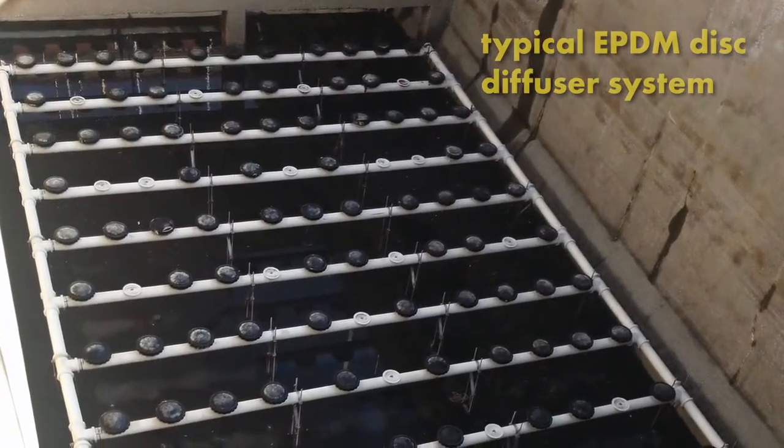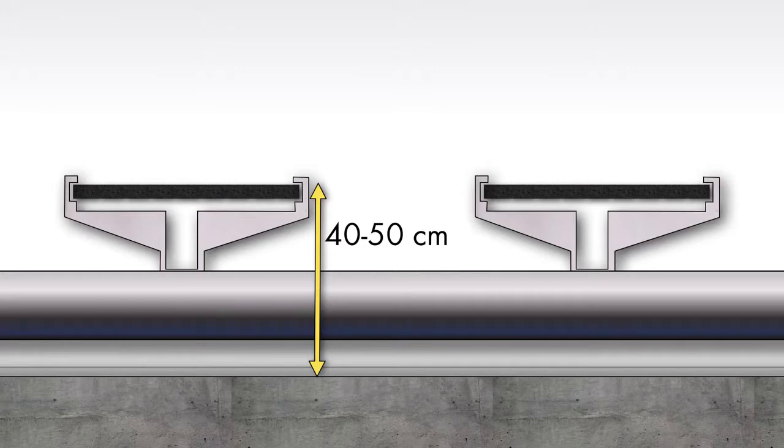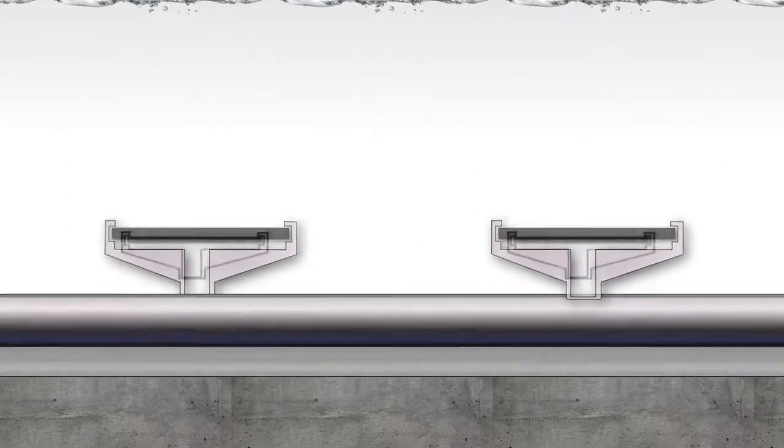Typical diffuser systems consist of diffusers mounted 40 to 50 centimeters above the tank floor. This can reduce the amount of contact time available to the bubbles.